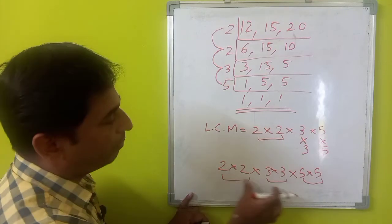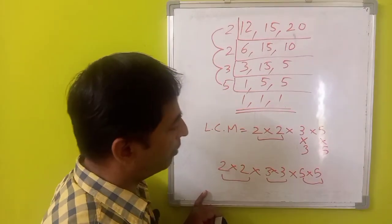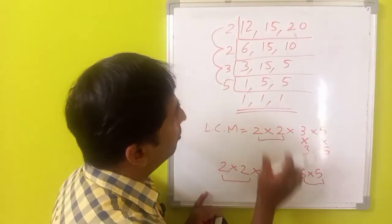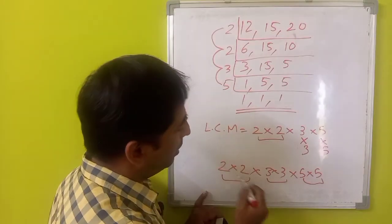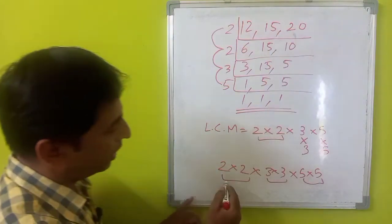So, if it is in pairs, then it is going to be a perfect square. So, this will be the smallest number which is perfectly divisible by, sorry, which is a perfect square and is also divisible by 12, 15 and 20.